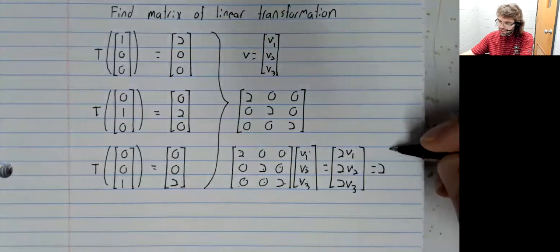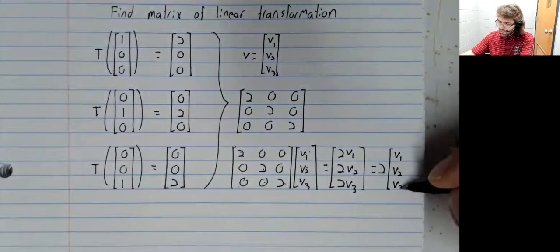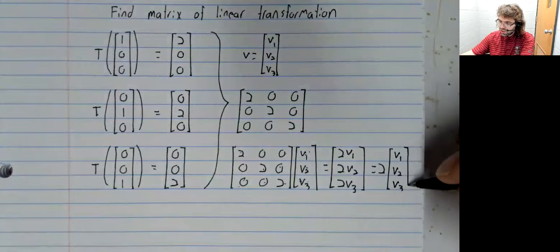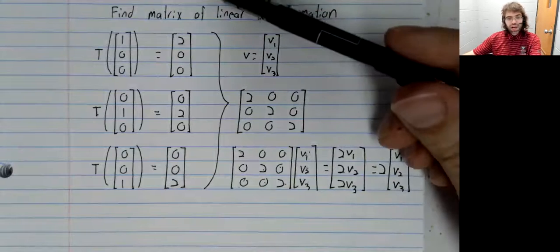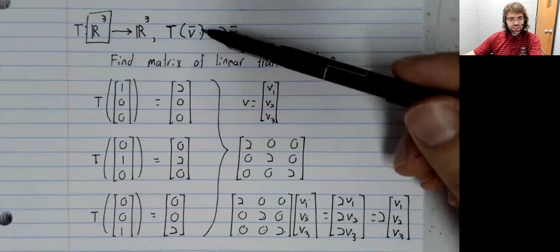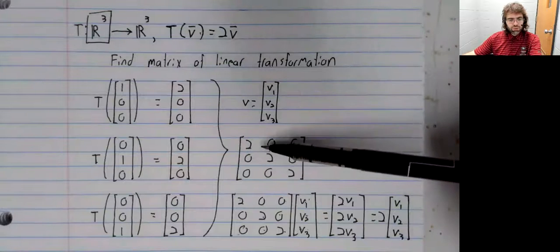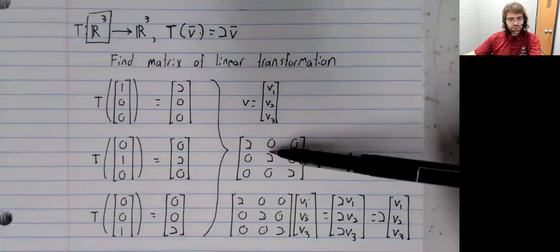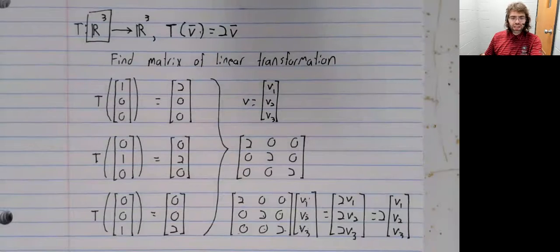And this does indeed equal twice V. So applying this linear transformation and multiplying by this matrix really are the same.